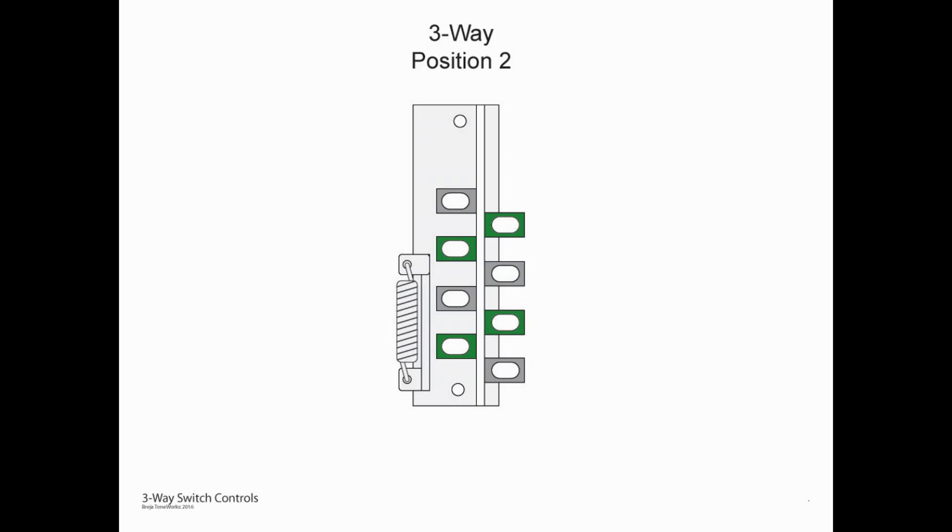Now if I move the switch to the middle position you can see on the left hand side lugs A2 and A4 are now joined and on the right side B1 and B3 are joined. Again without a jumper these are independent. The left side is going to work independently from the right side.